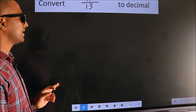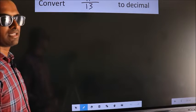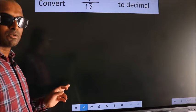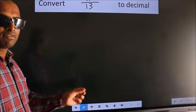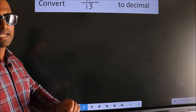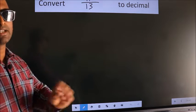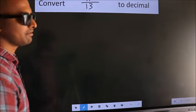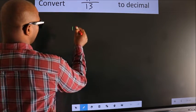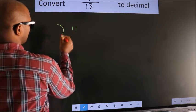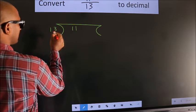Convert 11 by 13 to decimal. To convert this to decimal, we have to divide. And to divide, we should frame it in this way — 11 here, 13 here.